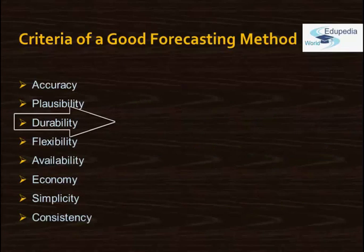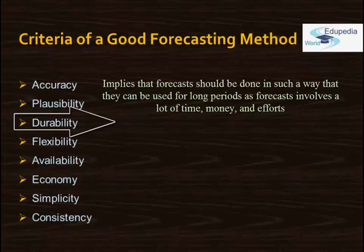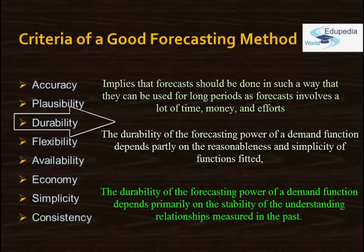Regarding durability, a demand function fitted to past experience may back-cast very well and still fall apart in a short time. The durability of the forecasting power of a demand function depends partly on the reasonableness and simplicity of the functions fitted, but primarily on the stability of the underlying relationships measured in the past. The importance of durability determines the allowable cost of the forecast.